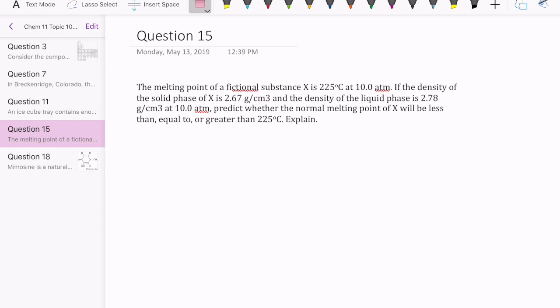In this case, we have a fictional substance X, which melts at 225 Celsius when the pressure is 10 atmospheres. The density of the solid phase is 2.67 g/cm3 and the density of the liquid phase is 2.78 g/cm3 at 10 atmospheres. We're asked to predict whether the normal melting point of X will be less than, equal to, or greater than 225.